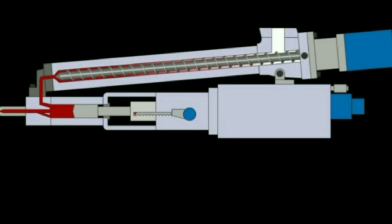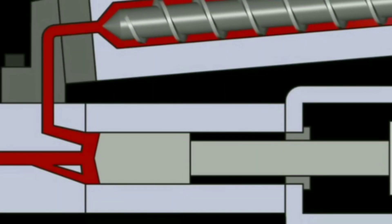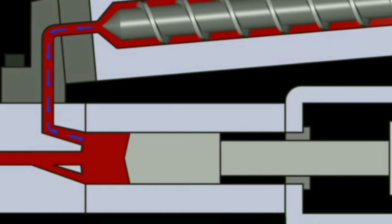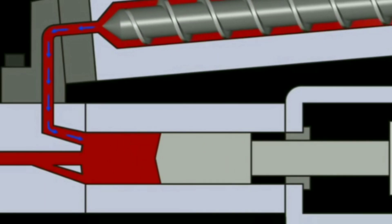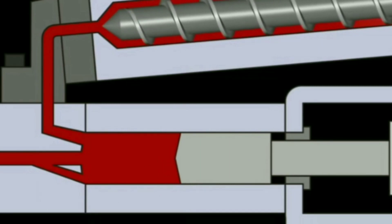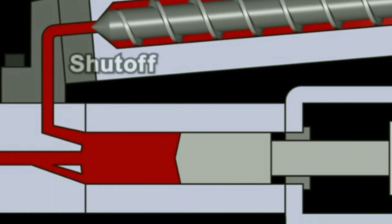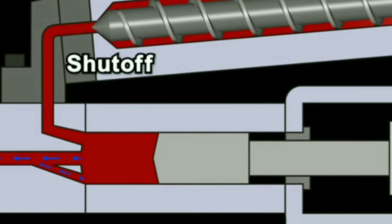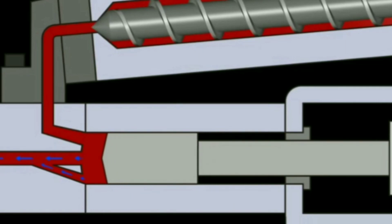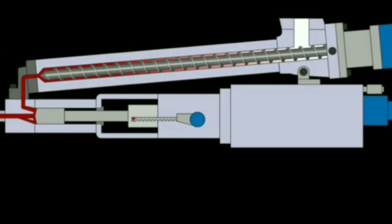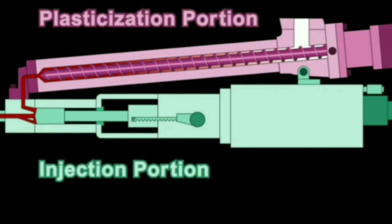Moving to the next — this is the working of screw-plunger type injection molding. Screw-plunger type and plunger-plunger type injection molding are quite similar. In this type of machine there are two chambers: one chamber is to plasticize the material, and another chamber is used for injecting the material inside the mold. The upper section consists of a plasticizing chamber with the hopper attached, and the plasticized material is transmitted to the injection plunger area.